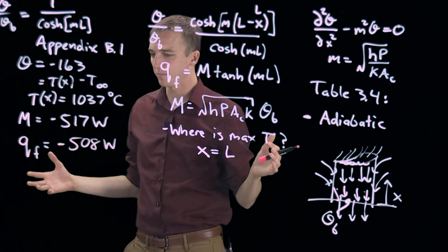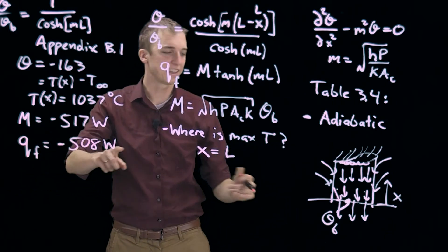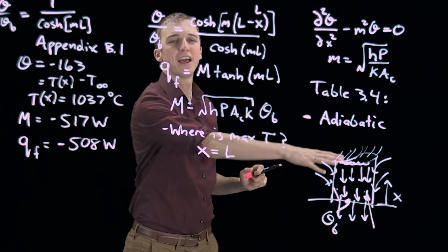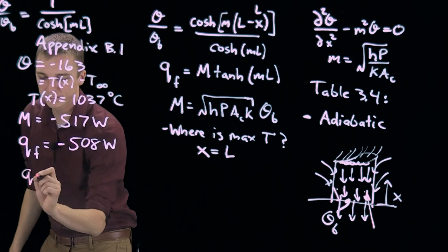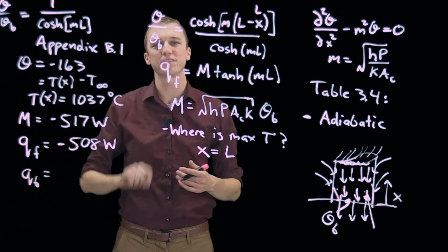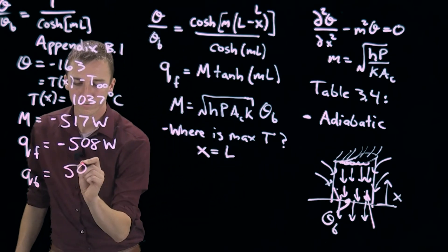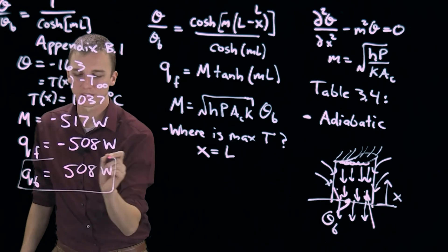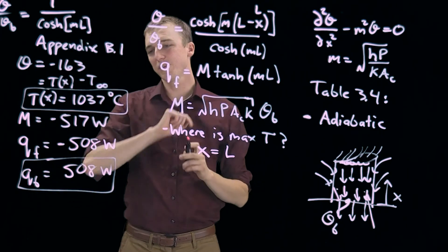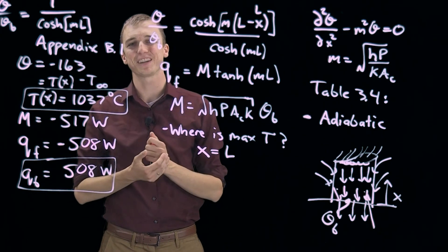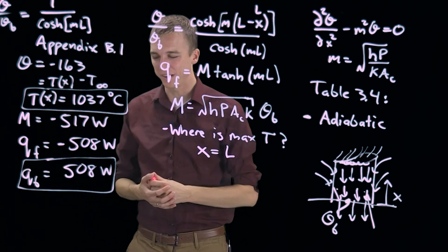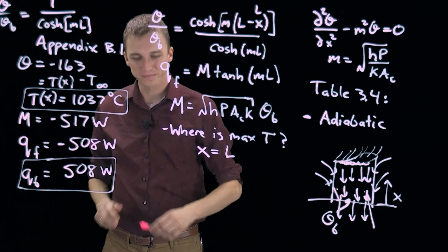You probably are saying, why did I get a negative number? Something's wrong. Remember, this is the heat transfer into our fin, which we don't have. We have heat transfer out of our fin. So Q base, or the heat transfer from the fin into the base, is simply the negative of this number, or 508 watts. So we know the maximum temperature, and we know the heat transfer rate. Luckily, we are 13 degrees Celsius off from melting. So we're playing it a little close there, but nonetheless, it will not melt. And we have found our heat transfer rate for our fin.